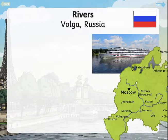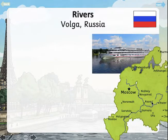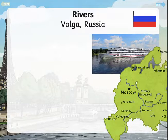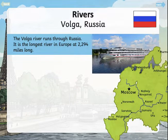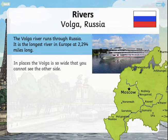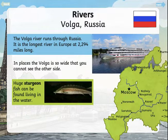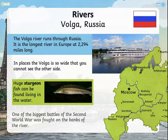One of the things you might choose to research are rivers. Here's a little bit about the River Volga in Russia. The map shows Western Russia, which is where it joins to Europe, and shown is the River Volga. The Volga River runs through Russia and is the longest river in Europe at 2,294 miles long. In places the Volga is so wide that you cannot see the other side. Huge sturgeon fish can be found living in the water. One of the biggest battles of the Second World War was fought on the banks of the river.